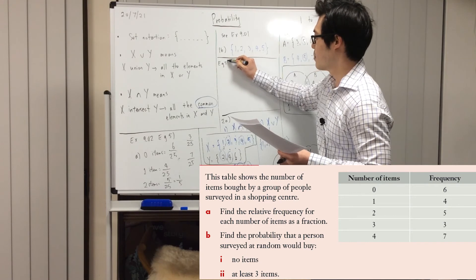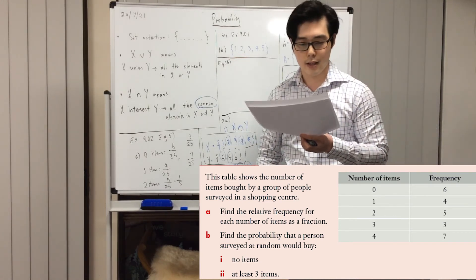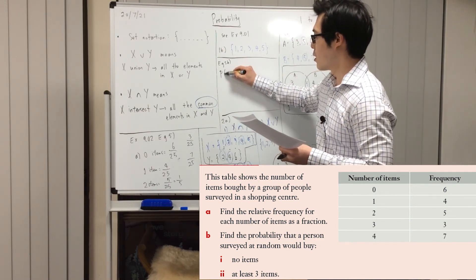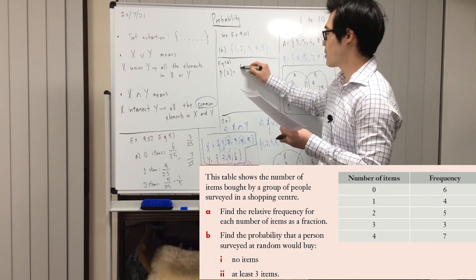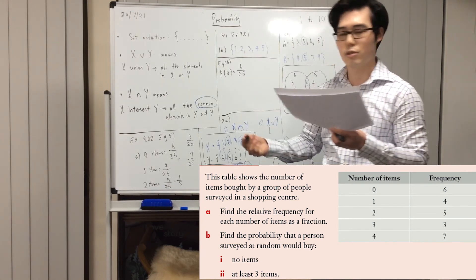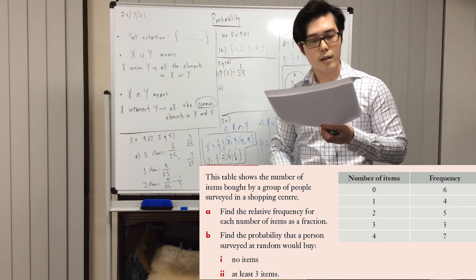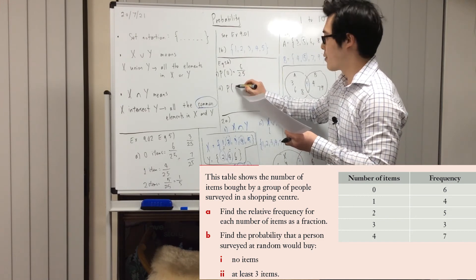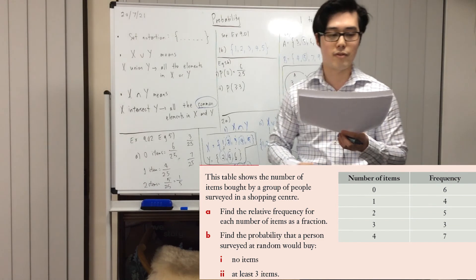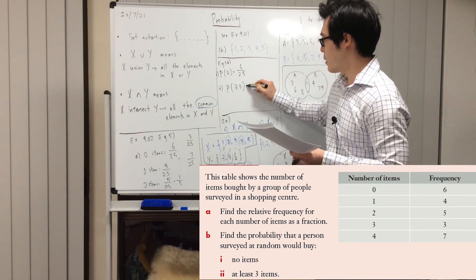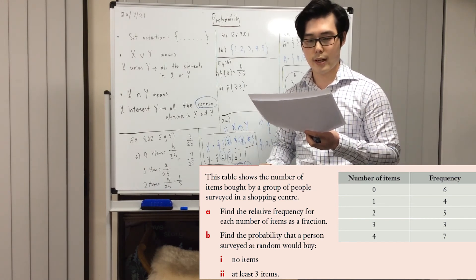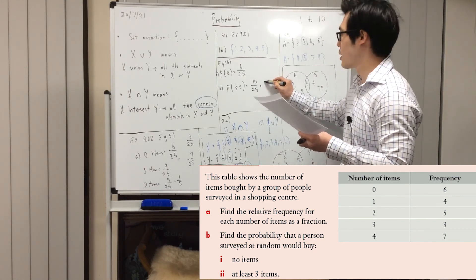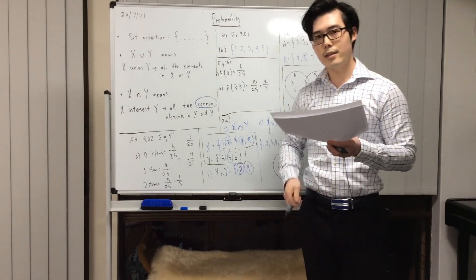For Example 5b: find the probability that a person surveyed at random would buy no items — that's P(0 items) = 6/25. For part (ii), find the probability that a person bought at least three items. 'At least three' means three or more, so add the frequencies for three and four items: 3 + 7 = 10 out of 25, which simplifies to 2/5.